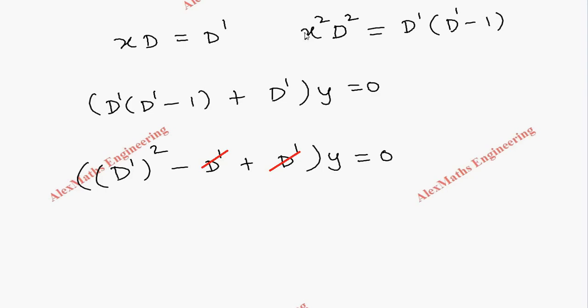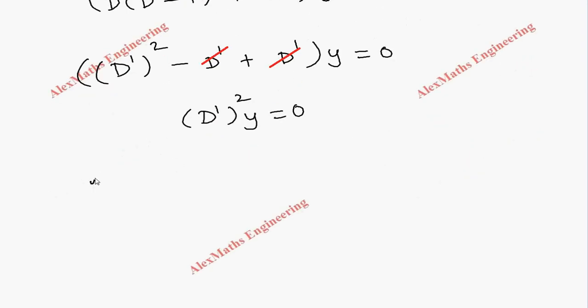Now auxiliary equation is m square equal to 0. We get two values for m, both are 0. Now complementary function is c1 plus c2 z into e power m z.